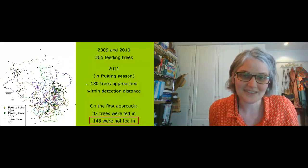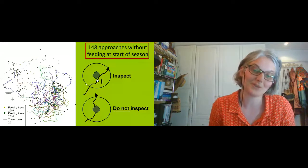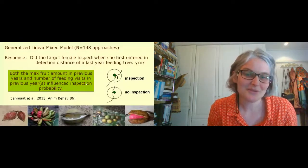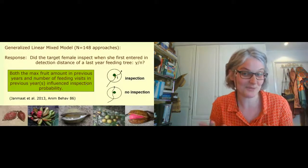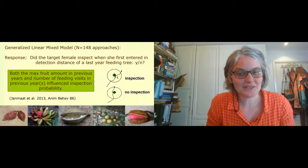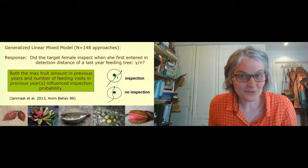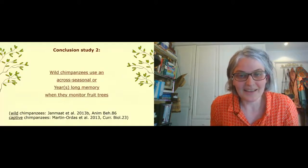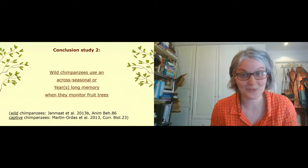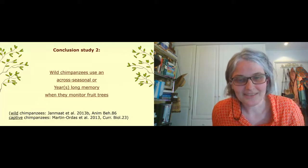Of the 148 approaches to non-feeding trees, we examined which trees were inspected and which were simply passed by on the way to other food sources. Running a GLMM, we found that both the maximum amount of fruit in previous years and the number of prior feeding visits — reflecting familiarity with the tree — significantly influenced inspection probability. The more familiar they were with the tree, the higher the chance they would inspect it upon coming within detection distance. These results are consistent with the possibility that wild chimpanzees use a cross-seasonal memory — perhaps even a year-long memory — when monitoring fruit trees.